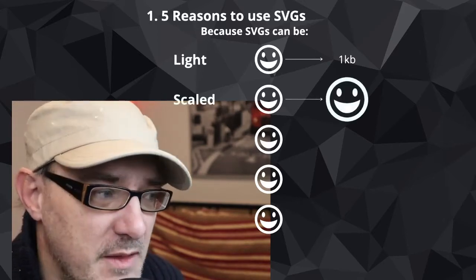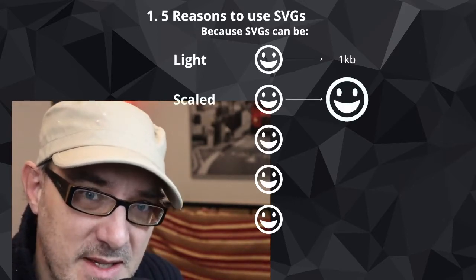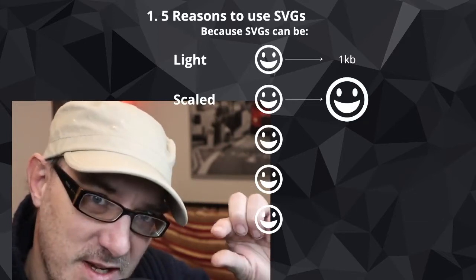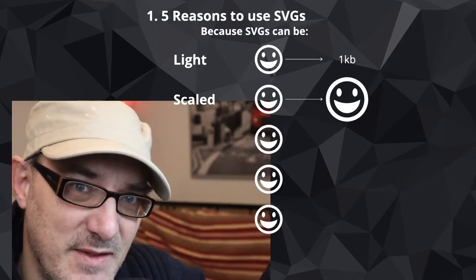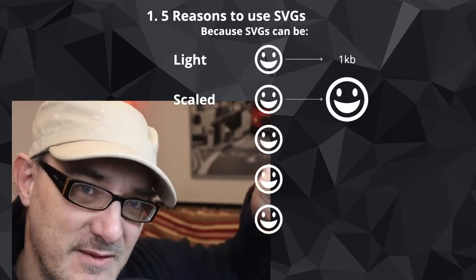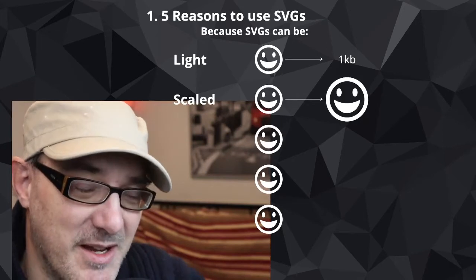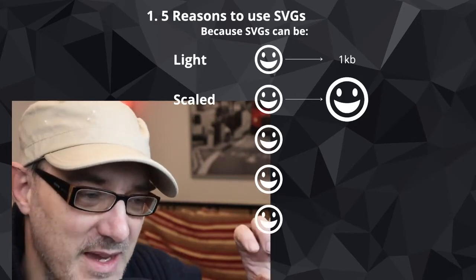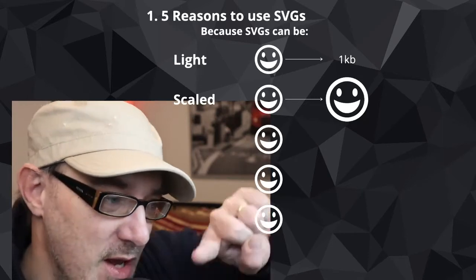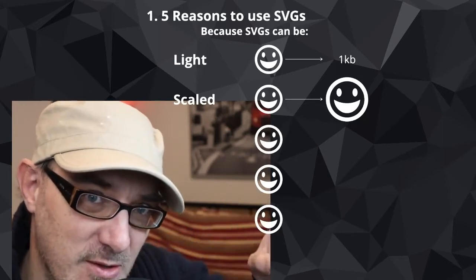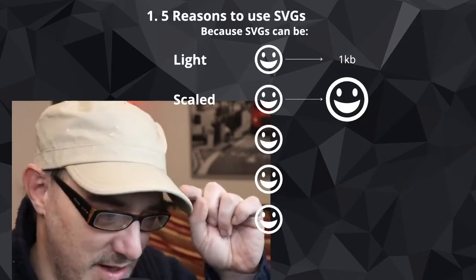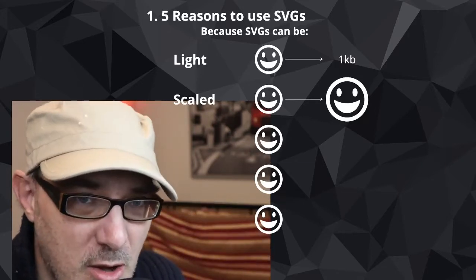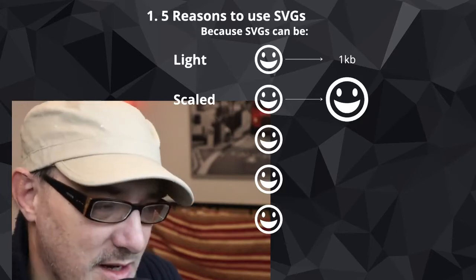The second reason is that SVGs can be scaled. We can have the same file look good at a small size and a big size because it's vector content. The icon shown on screen is pictorial vector content — it scales up simply. It's not a load of pixels trying to make a circle; in code we say this is actually a circle, this is actually a line. This means it ends up looking much better at higher resolutions and larger scales.